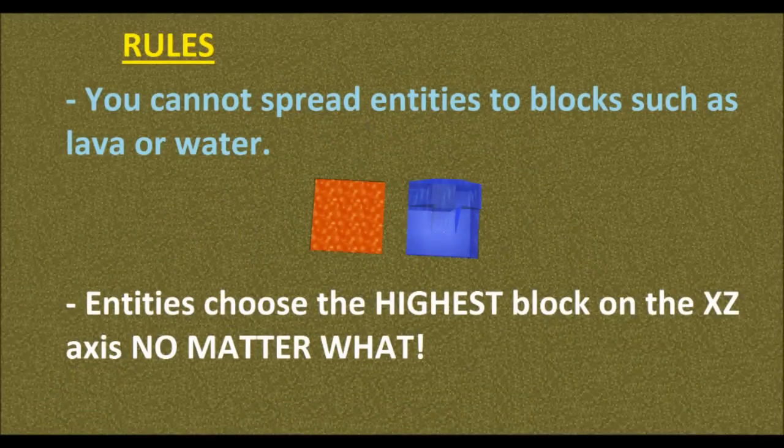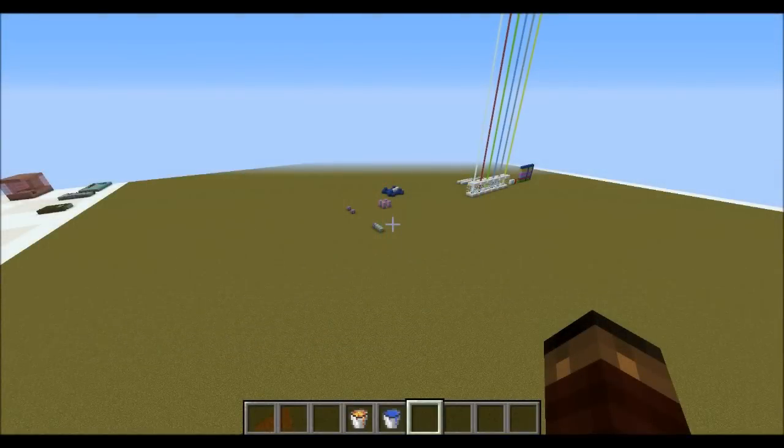One last thing to note is that when the spread players command is used, the entities will always be on the highest point of the x and z coordinates, so it's going to pick the top block — always going to be on the surface. Another rule is that players will never be spread onto blocks such as water or lava, so bear that in mind when using this command.